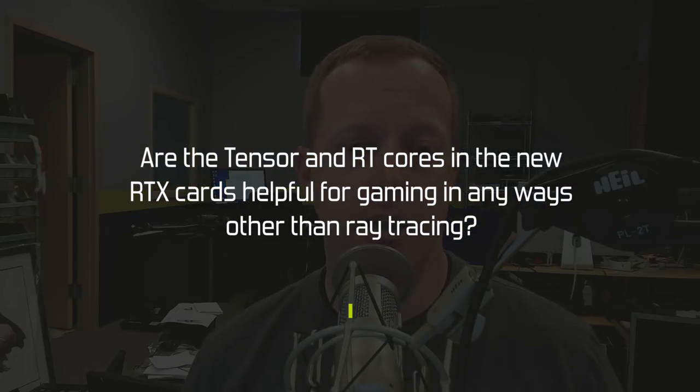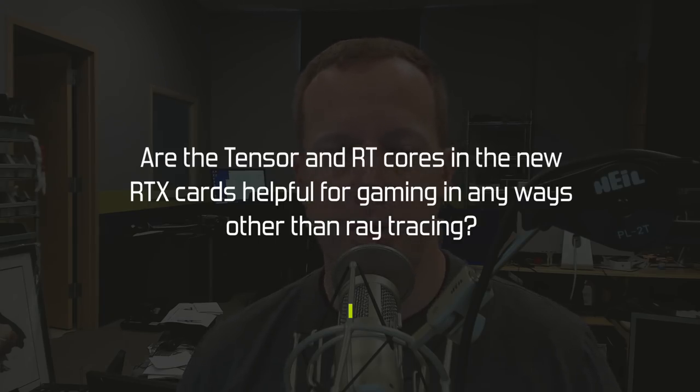Another question asks: are the Tensor and RT cores in the new RTX cards helpful for gaming in any ways other than ray tracing? The answer is yes. The Tensor cores are more commonly known as AI processing cores. NVIDIA really only showed one example at their tech day, and that was DLSS — deep learning super sampling — an anti-aliasing algorithm that uses deep learning, pre-processed on the cloud, running on the driver for inference. You can see how that would improve over time as the deep learning algorithms improve or you feed it more data.